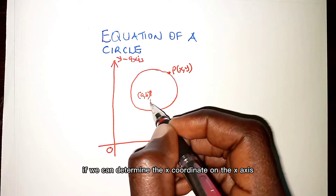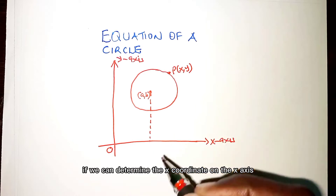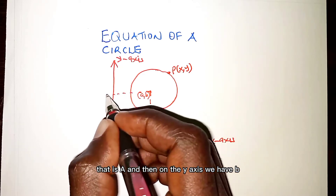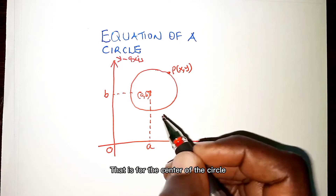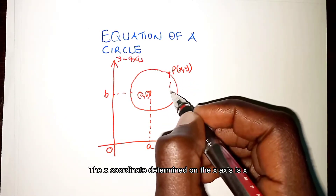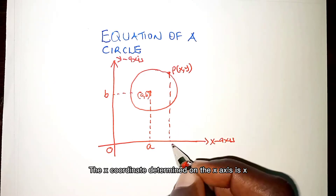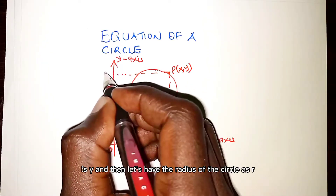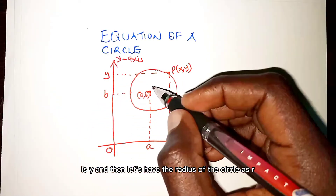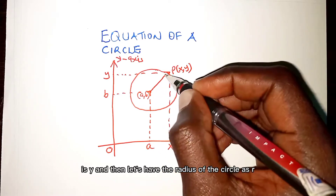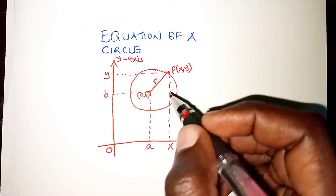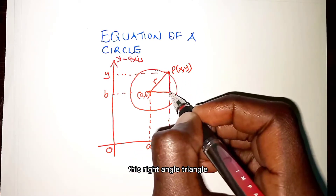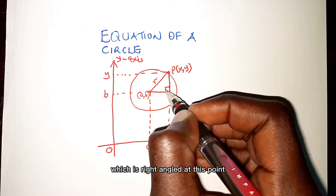This is the origin. We can determine the x-coordinate on the x-axis, that is a, and then on the y-axis we have b — that is for the center of the circle. For point P, the x-coordinate on the x-axis is x and the y-coordinate is y. The radius of the circle is R. We consider a right-angle triangle, right-angled at this point.